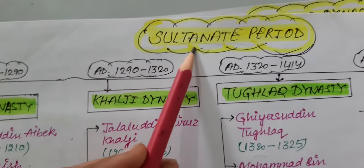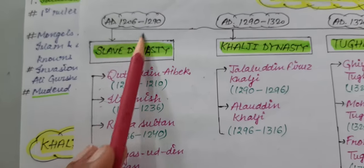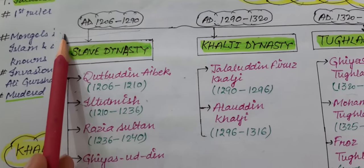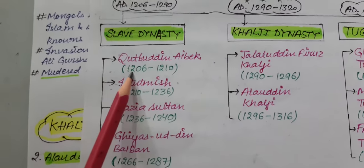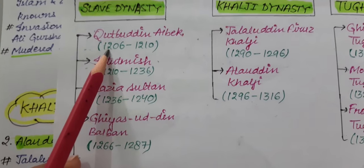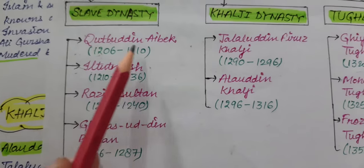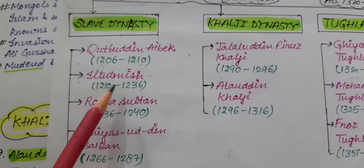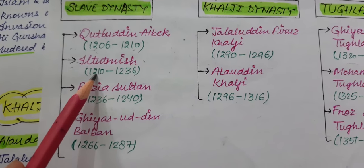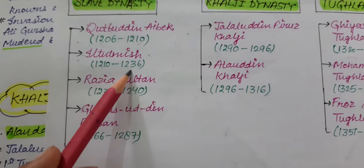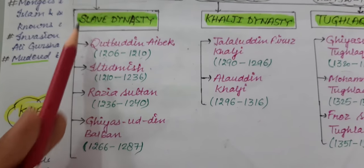In the Sultanate period, first we discuss the Slave Dynasty which ruled from 1206 AD to 1290 AD. The founder of the Slave Dynasty was Qutubuddin Aibak, who ruled from 1206 AD to 1210 AD. The next ruler was Iltutmish, who ruled from 1210 to 1236 AD, and he is considered the real founder of the Slave Dynasty.